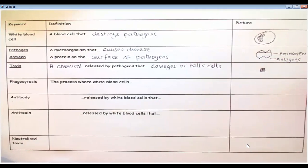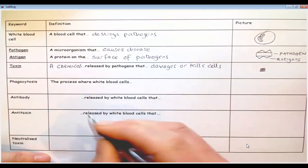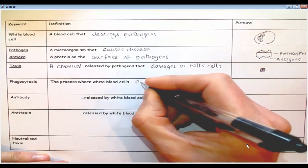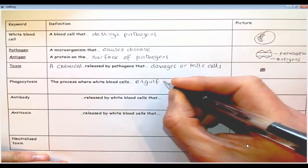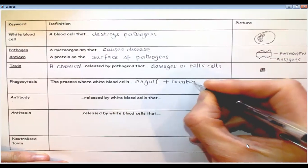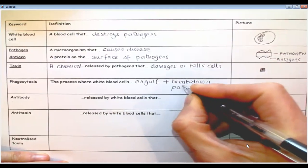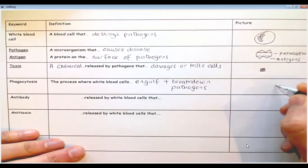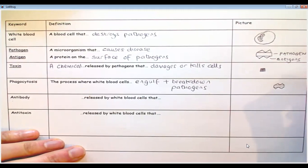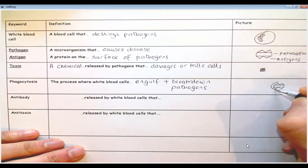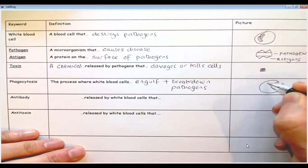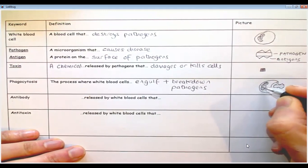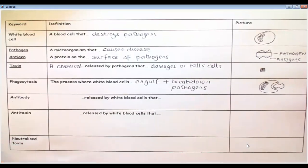Phagocytosis is the process where white blood cells engulf and break down pathogens. I'll draw a little picture of that process — the white blood cell engulfing looks something like a Pac-Man shape. Students often say it looks like a Pac-Man, and in the picture it does — but that's the process of engulfing, and that's phagocytosis.